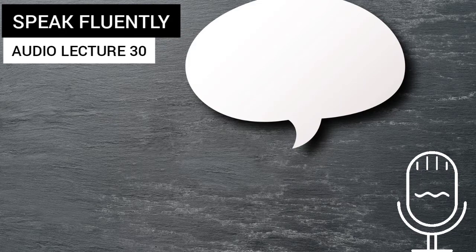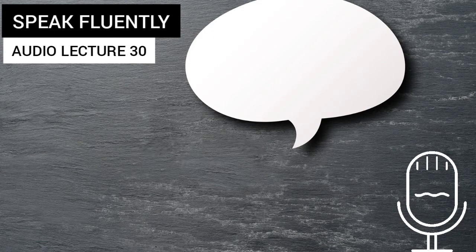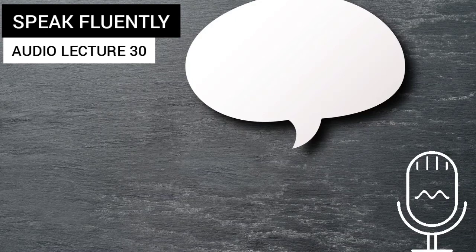The third step is one of the most important steps — this is what I call output: speaking practice. It comes last because first we need input. We need to put in the essential things, which are sentence making and listening. If the input is correct and strong, the output will also be strong. Without input, you cannot expect output. So practice sentence making and listening regularly, then go for speaking practice.